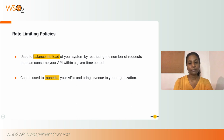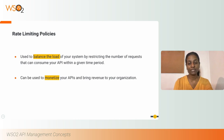Through the API Publisher portal, you can assign these rate limiting policies to a particular API, which determines how the API behaves when it is exposed to the outside world.